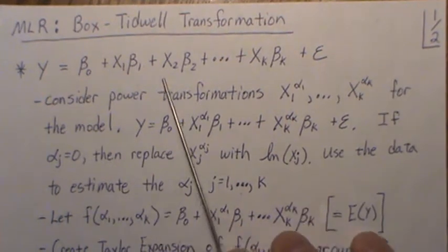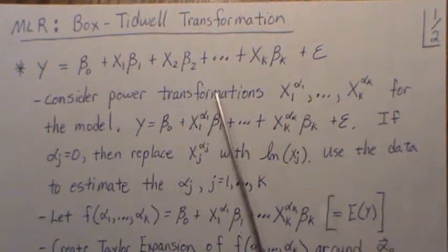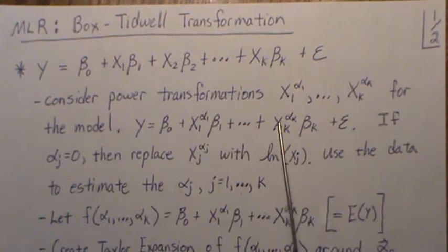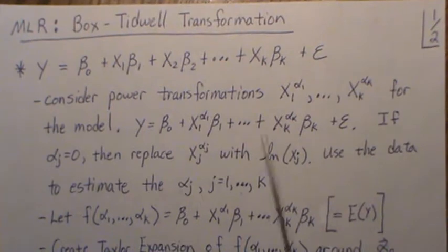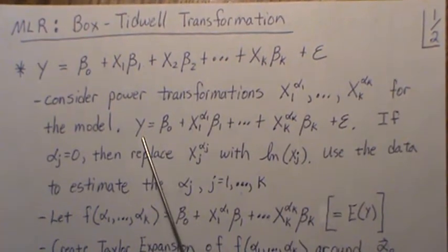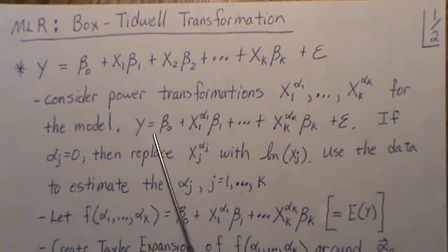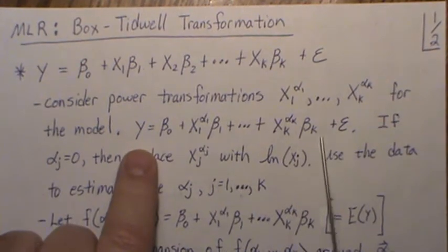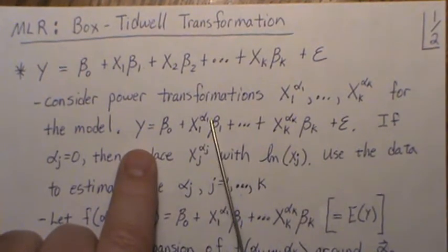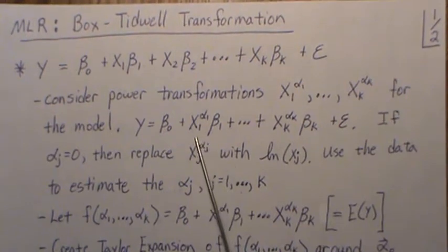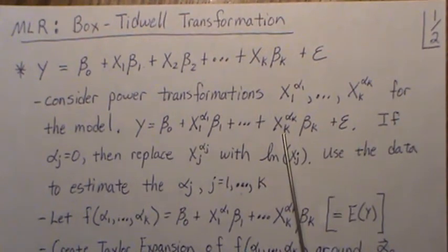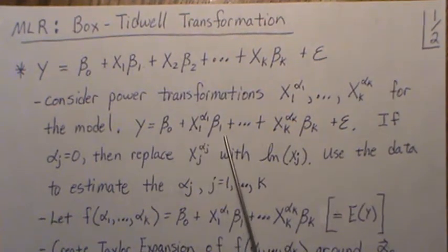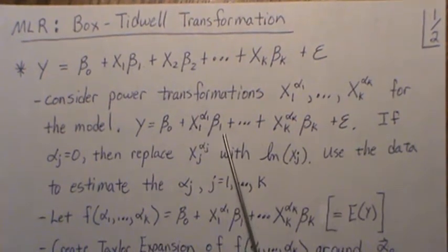So we're in the multiple linear regression setting and we want to consider power transformations of this form, so each regressor value is raised to a value alpha_i for the model. So that means ultimately this is the model that we're interested in. And it sort of makes sense.